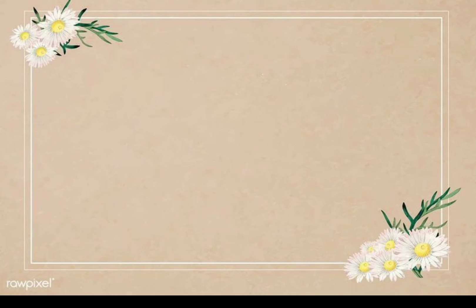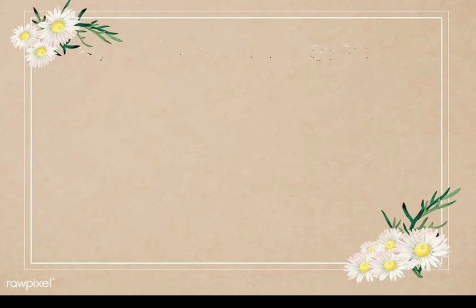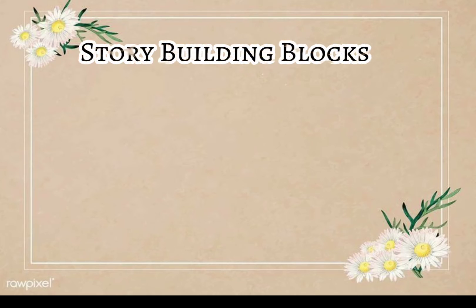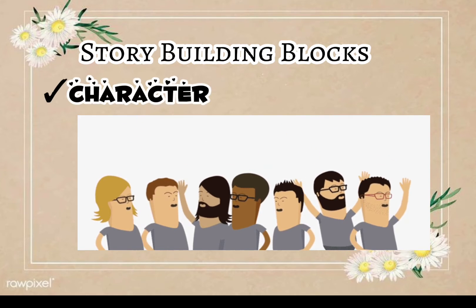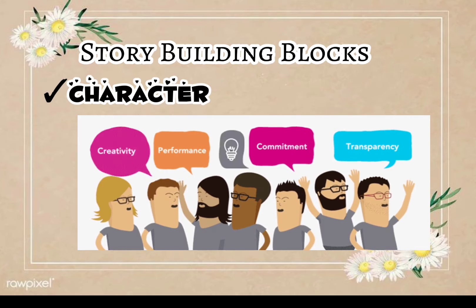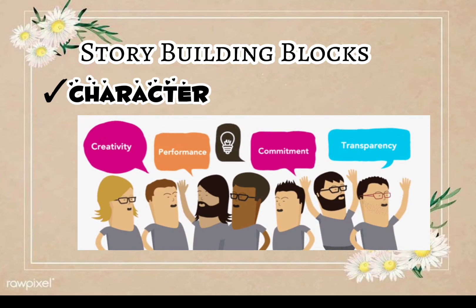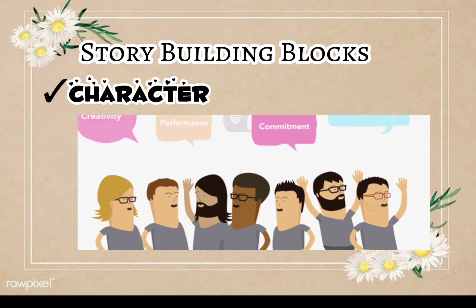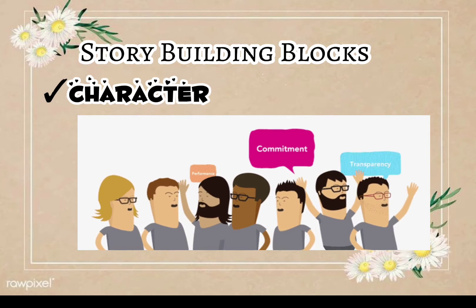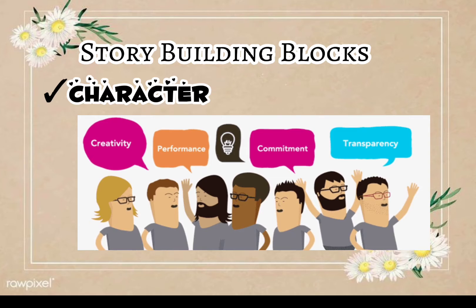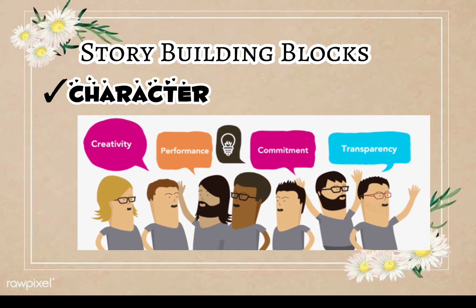Now, let us proceed with finding the story. There are five story building blocks. The first one is the character. Memorable stories feature people who are directly involved in the issue or situation and are directly affected by it or have a stake in the outcome. As John Larson says, great stories begin and end with people.